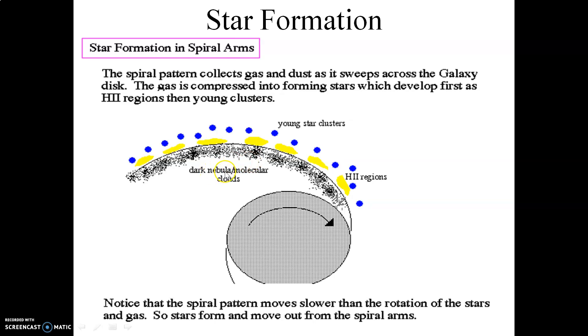This right here is material that has not yet undergone gravitational collapse to form stars. These are called, by the way, dark nebula or molecular clouds. So you have molecular clouds here. You then have nebulae that are forming stars here. And then you have already formed stars here. So this material has already passed through the wave. This material here has yet to pass through the wave.